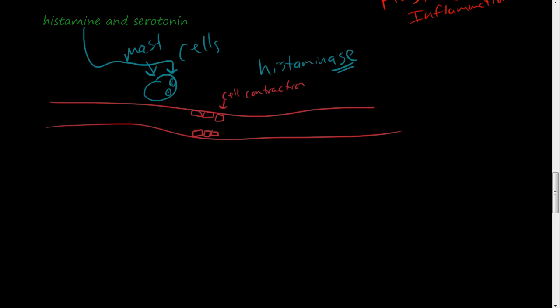What happens is these histamines cause cell contraction. They cause these cells to contract inward to shrink down on themselves, causing a greater space right here. And that is vascular permeability. It's making this vessel more porous so leukocytes and other things can exit the cell to get into where this damage is. And that's histamine.